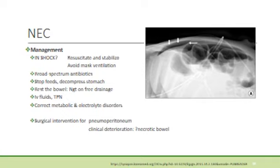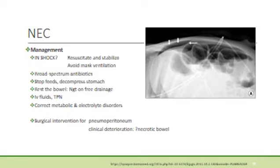When managing a baby with NEC, it is very important to establish whether the baby is in septic shock. Resuscitation and stabilising the patient is of paramount importance. Using the ABC approach, if the baby has difficulty breathing, it is important to avoid mask ventilation as excess air transmitted through the oesophagus can lead to overdistension of the gut and bowel perforation — these babies should preferably be immediately intubated. Circulation should be assessed and a bolus of resuscitation fluid and/or inotropes considered.